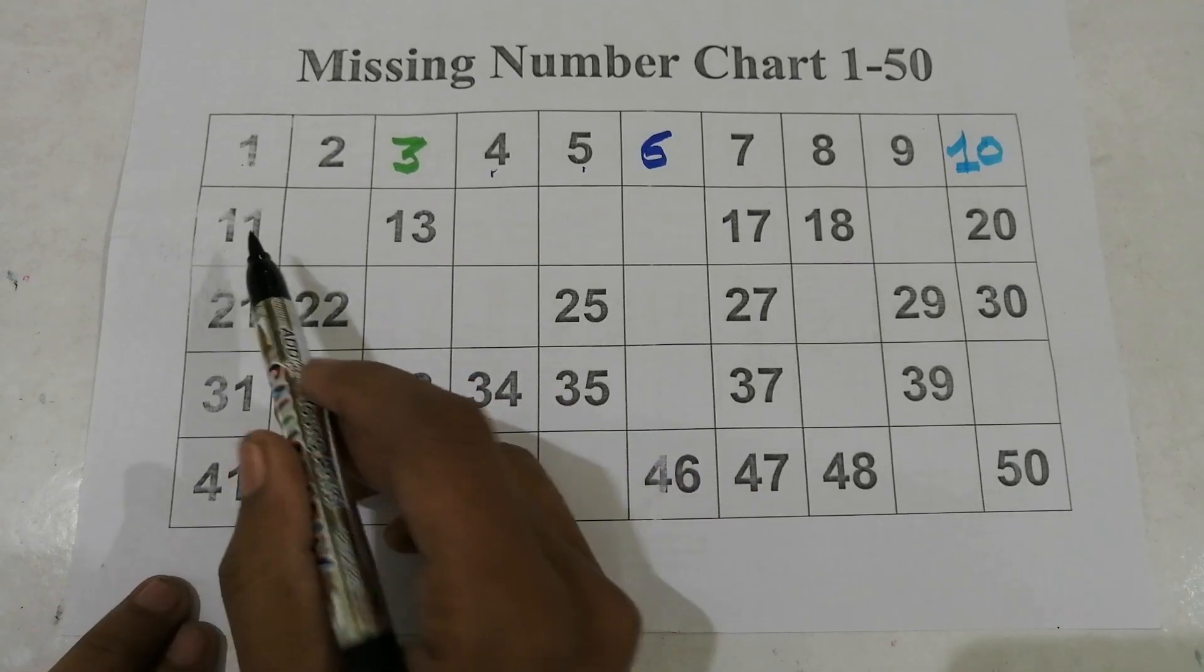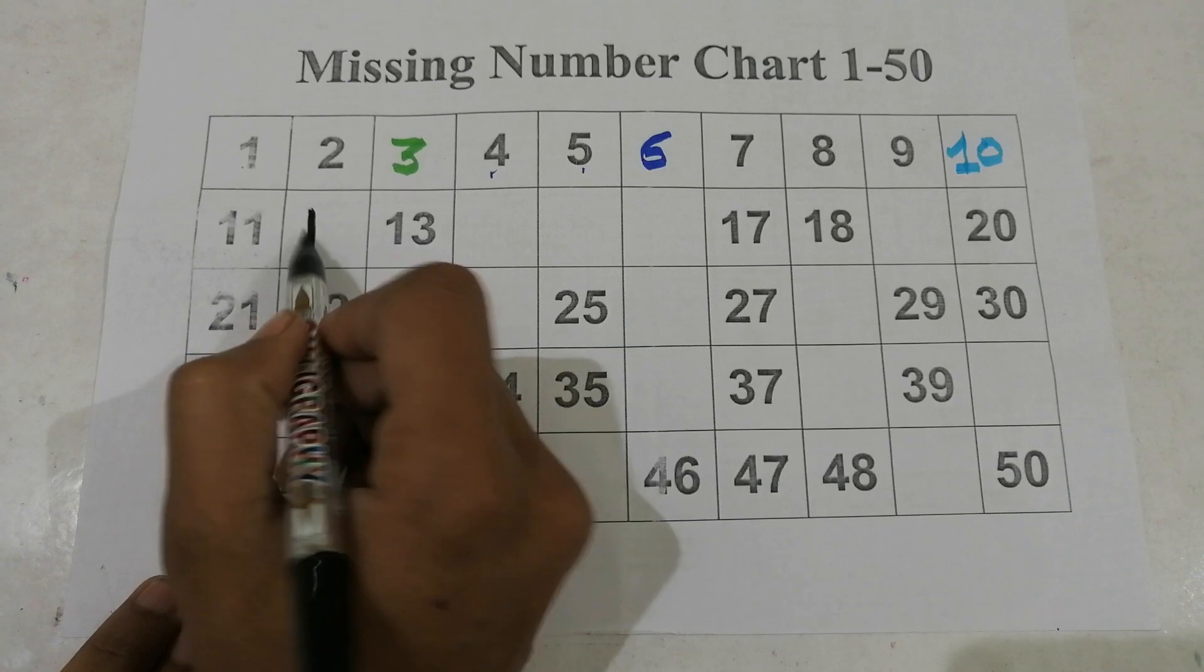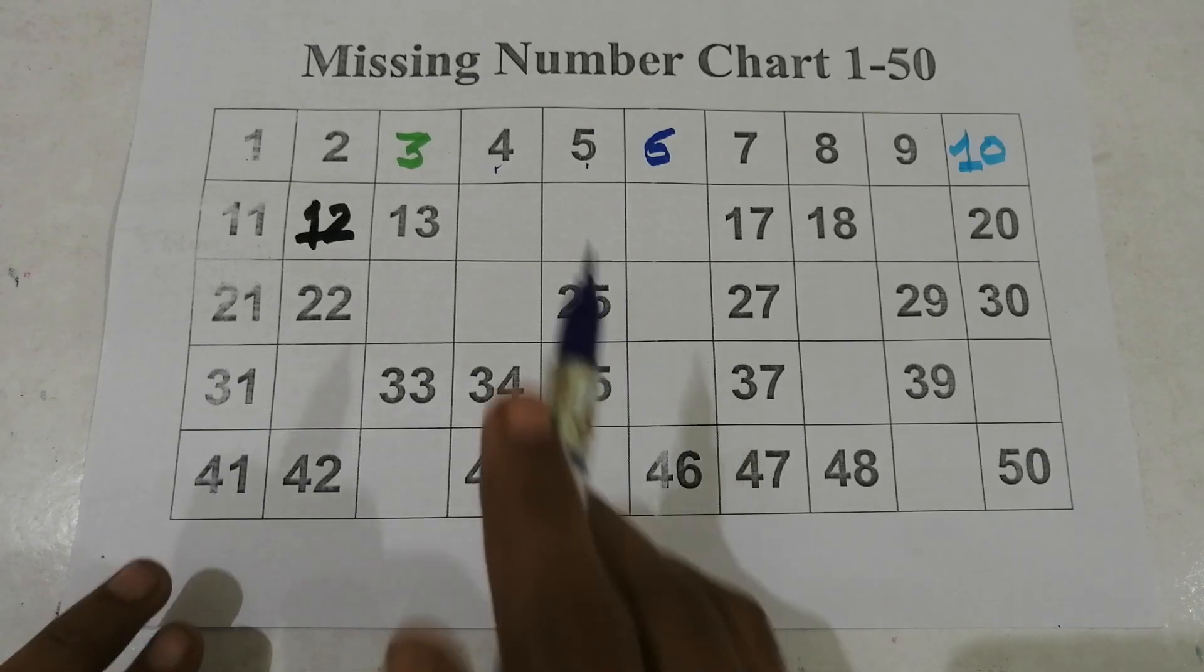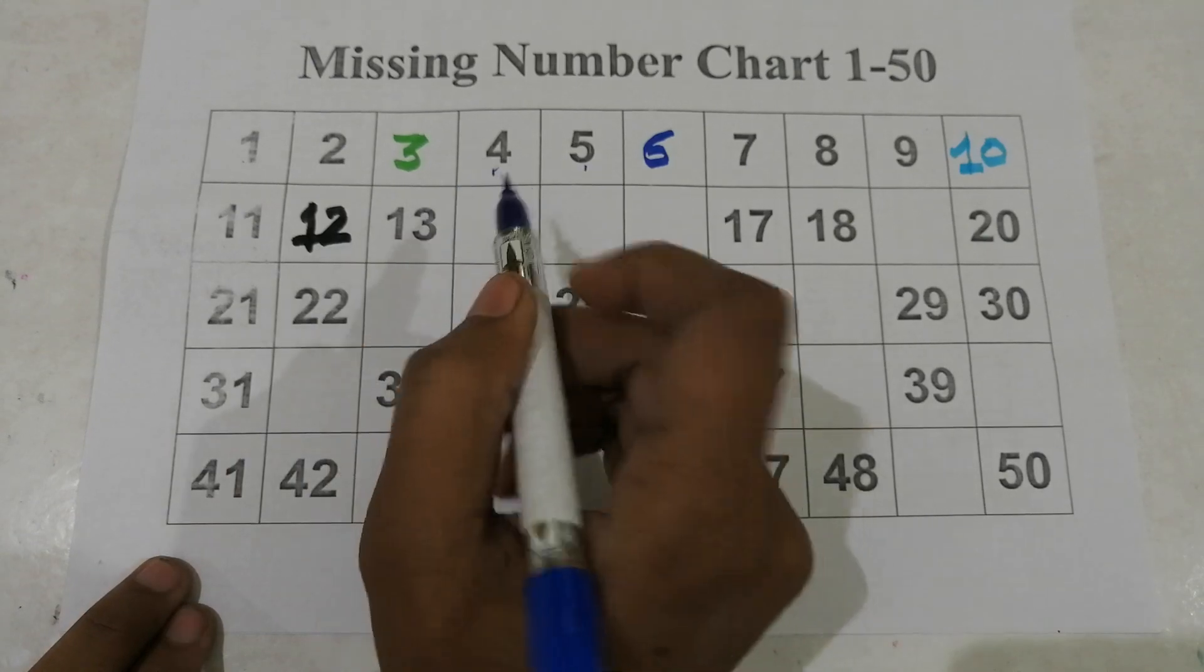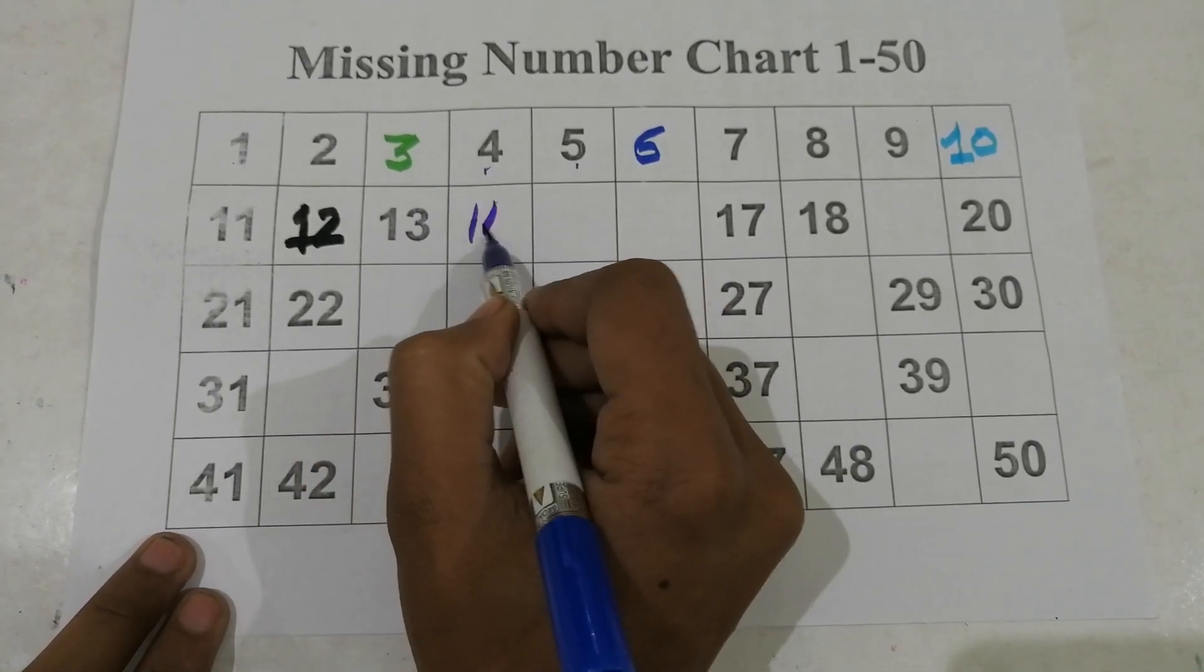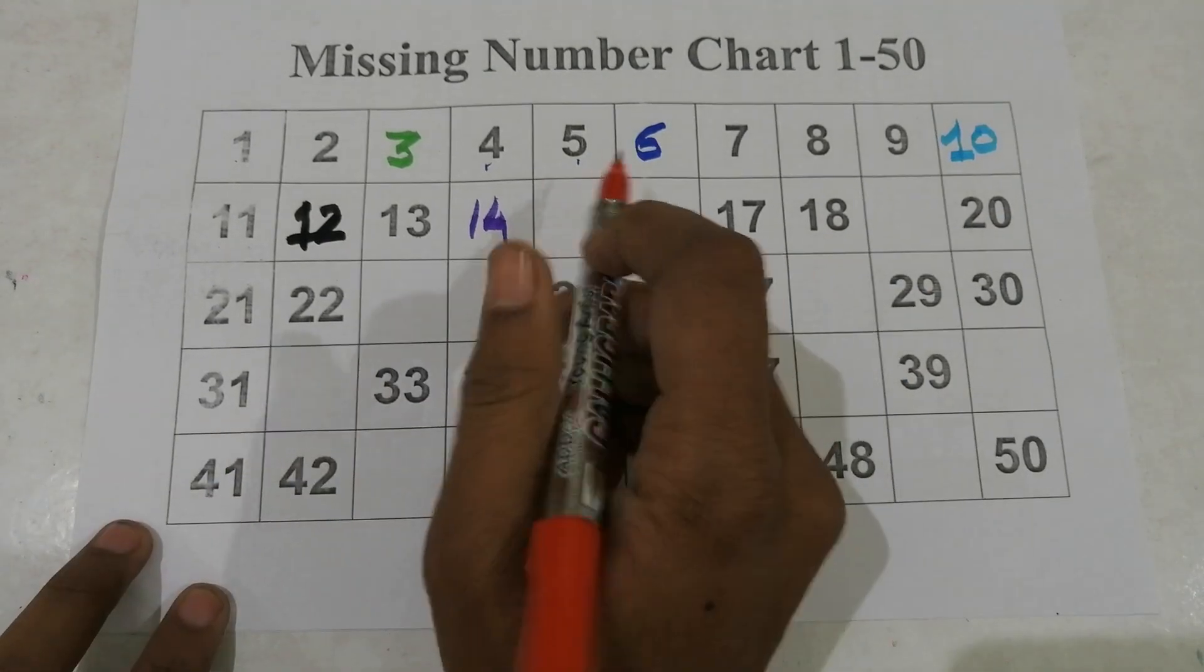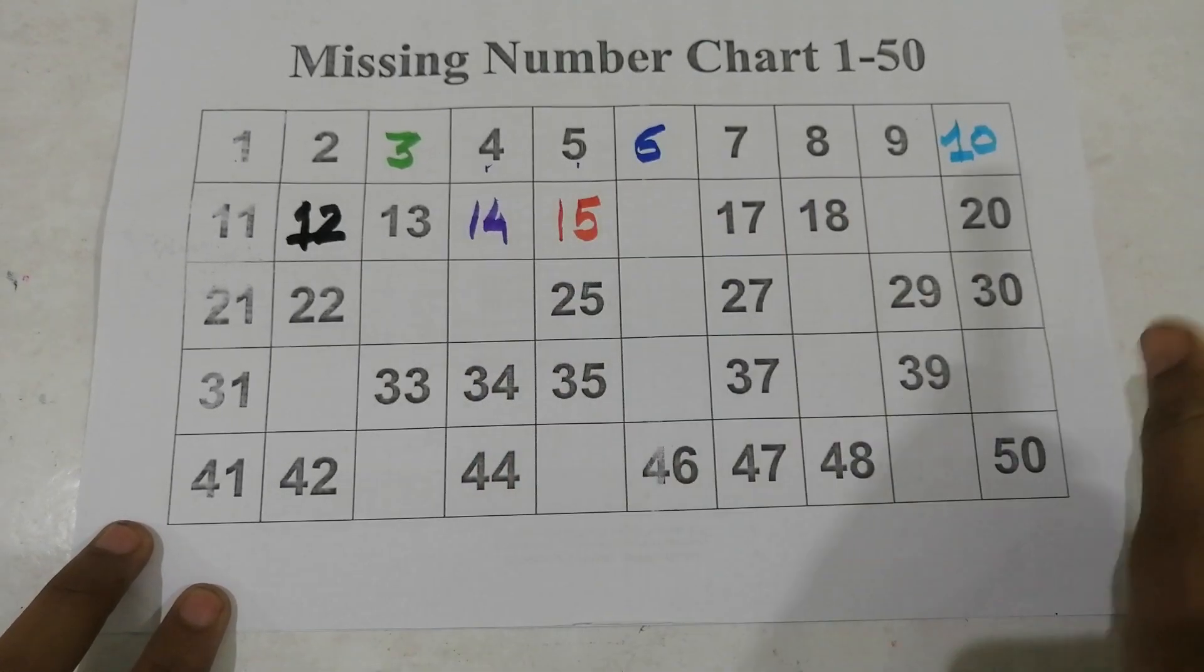11 and black color 12, 1, 2, 12. 13 and missing number with purple color 14, red color 15.